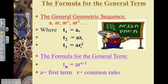Where a still represents the first term, r is the common ratio. However, Tn is still the nth term. It also represents the general term formula.